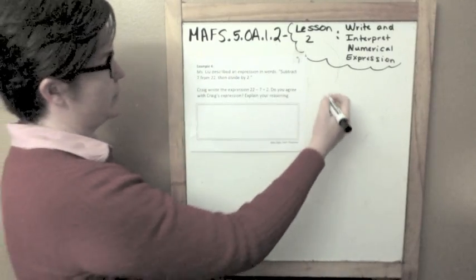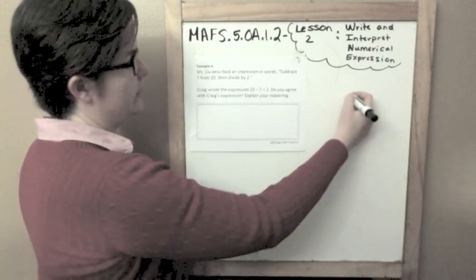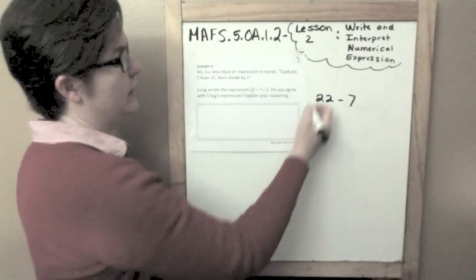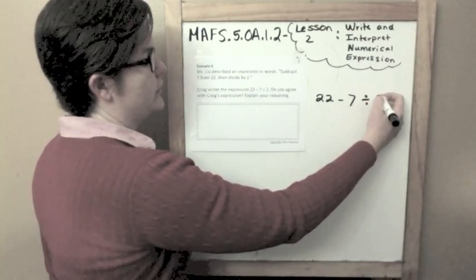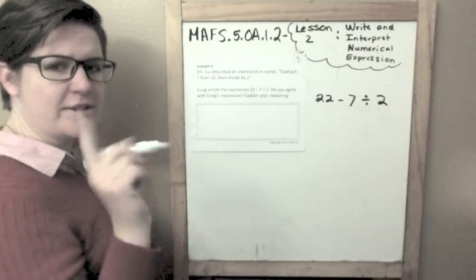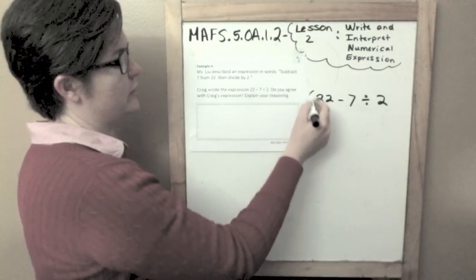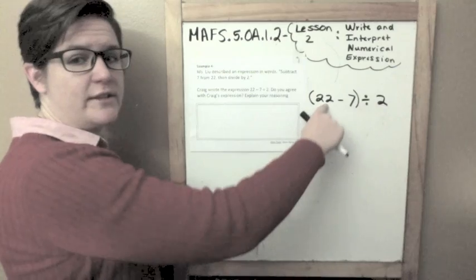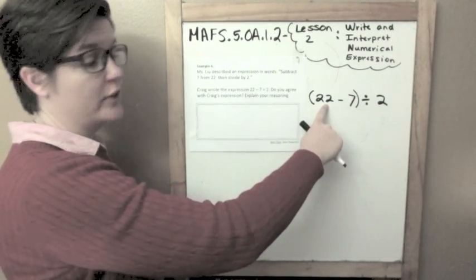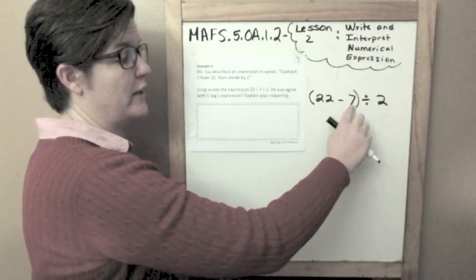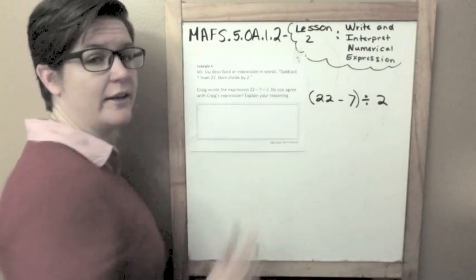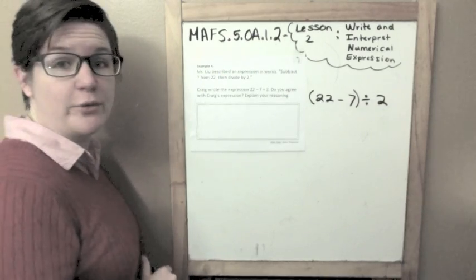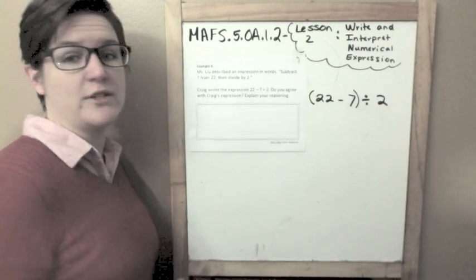Miss Lou described this expression. She said subtract 7 from 22, I'm taking 7 away from 22, and then I'm going to divide by 2. However, the first thing that she said to do is subtract 7 from 22. If I don't do those parentheses first where I want to subtract first, then that means I have to go right away to 7 divided by 2 and then do 22 minus that quotient.